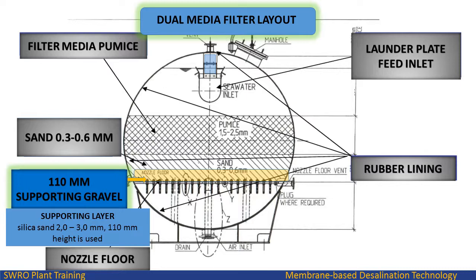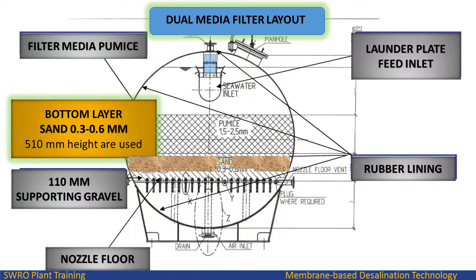Supporting layer: filled with silica sand 2.0 to 3.0 millimetres, with a height of 110 millimetres. It is used to support the sand media layer. Bottom layer: filled with silica sand 0.3 to 0.6 millimetres, with a height of 510 millimetres.